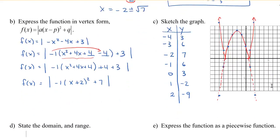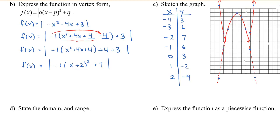Using the graph, we're going to find our domain and range. We can see that the domain — the x-values — can go off to both the left and right, so we say the domain is all real numbers. Now the range: the lowest value is 0. Both x-intercepts sit on the x-axis, so y is greater than or equal to 0 since the graph points upward. Finally, for practice, we're going to express the function as a piecewise function.